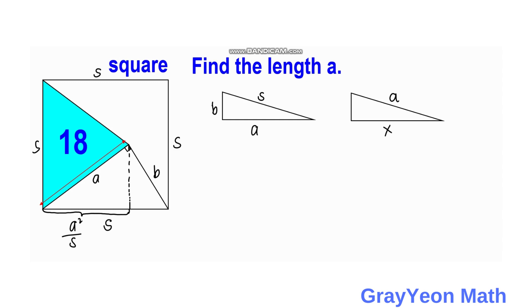They should also be theta because they are similar triangles. Then we have A over S, adjacent over the hypotenuse, equal to X over A. Solving for X, we get X equals A squared over S. So that length is A squared over S.